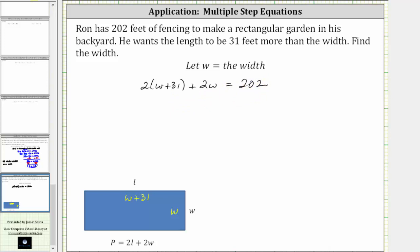To solve the equation, we need to simplify the left side by first clearing the parentheses by distributing two, and then combining like terms. Distributing two times w is two w, plus two times 31 is 62, plus two w equals 202.